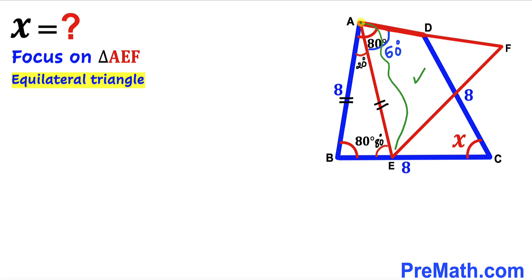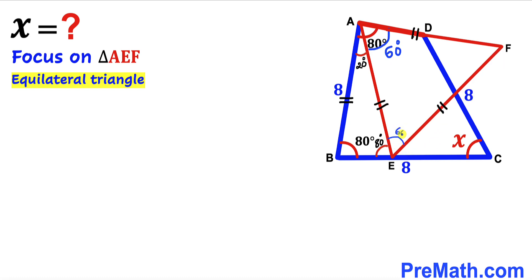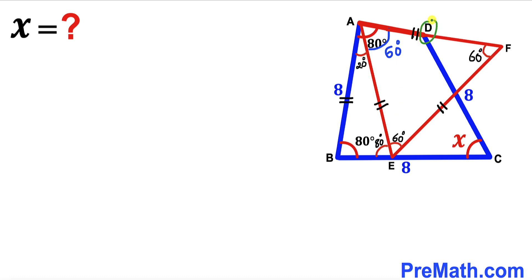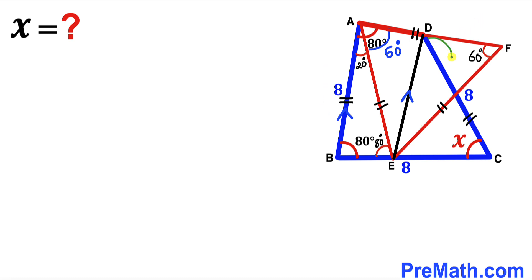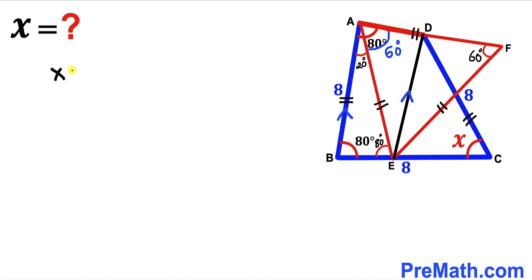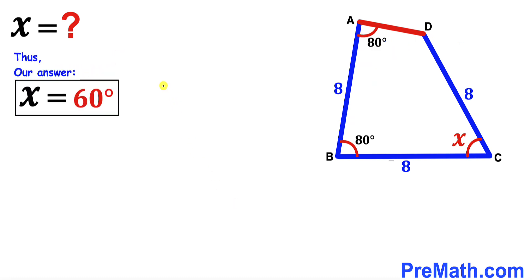All three sides of equilateral triangle AEF are equal in length. Next, I connect points D and E. We can see that segment DE is parallel to side AB, and furthermore side CD equals segment EF in length. Therefore, angle x and the 60-degree angle are congruent, and we conclude that angle x must be 60 degrees.